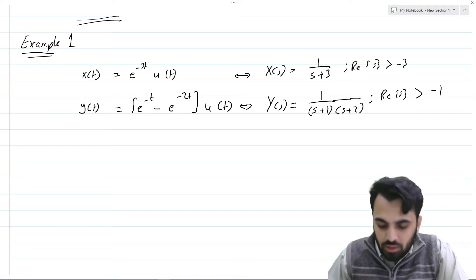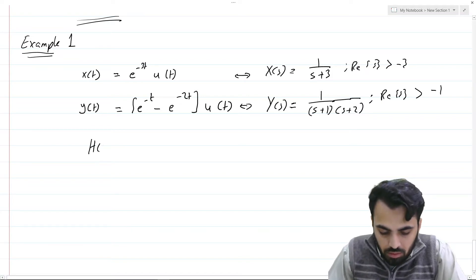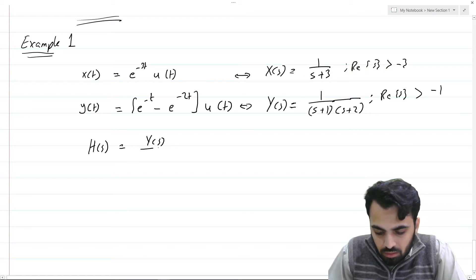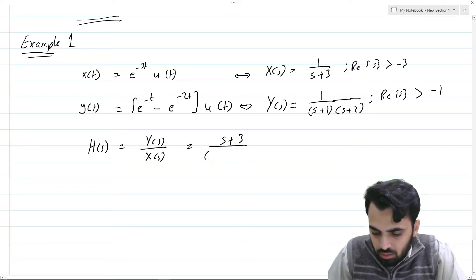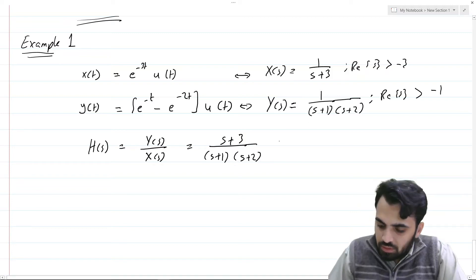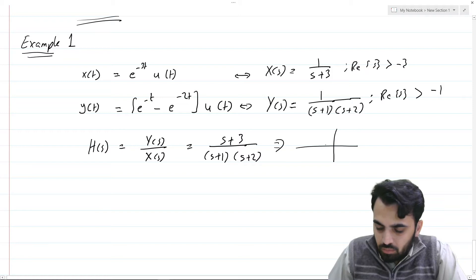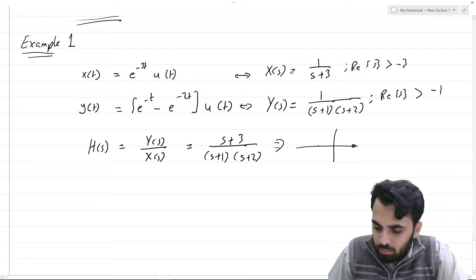Now let us determine the transfer function. The transfer function H(s) = Y(s)/X(s) = (s+3)/((s+1)(s+2)). In the s-plane, we have a zero at s = -3 and poles at s = -1 and s = -2.